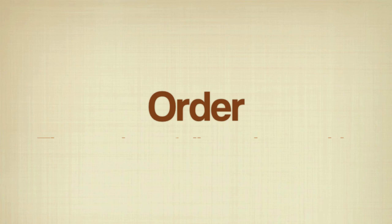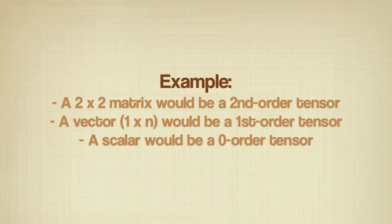The order of a tensor is the number of dimensions a table has. For example, a 2x2 matrix would be a second order tensor, a vector which is a 1xn matrix would be a first order tensor, and a scalar would be a zero order tensor.